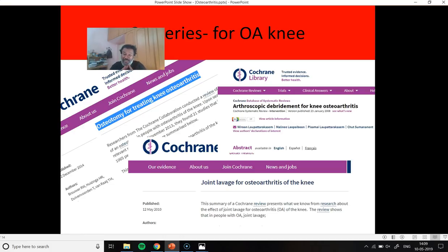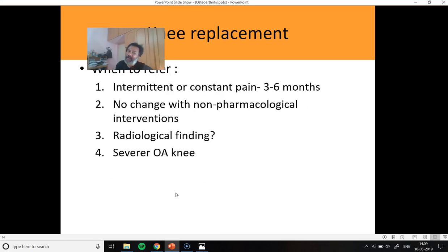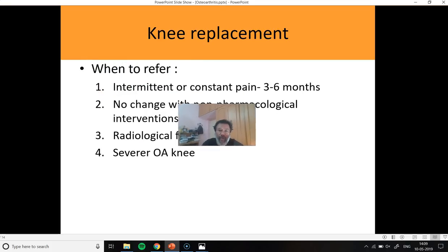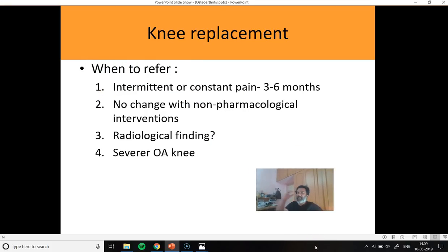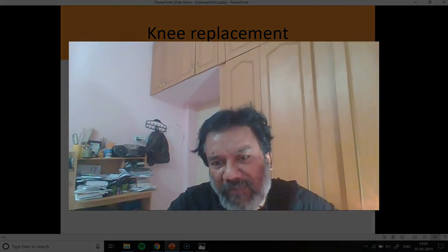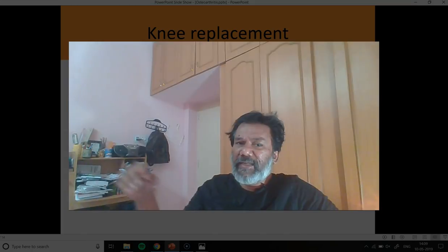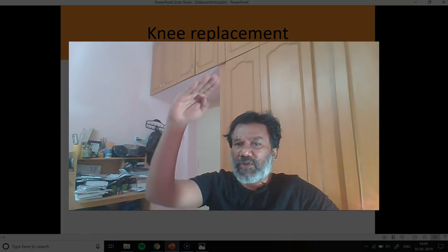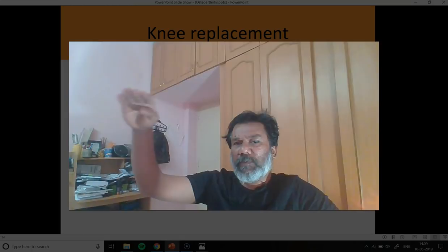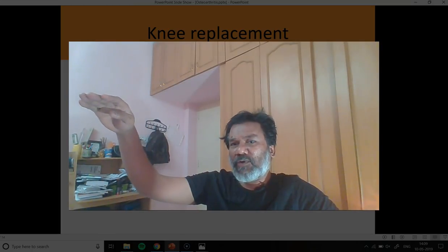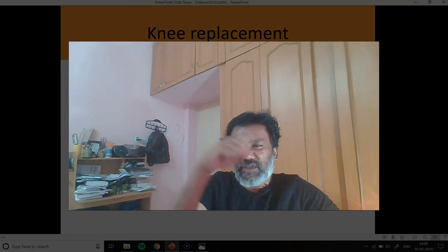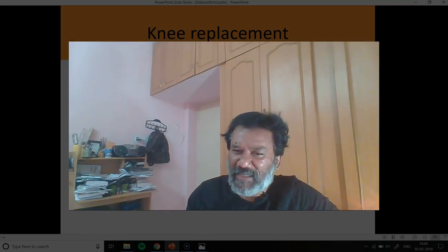Most orthopedic surgeons, reviews, and systematic reviews all point to not doing these surgeries. Now, a lot of people are getting knee replacements. The problem with OA knee is that it is a condition where the symptoms go up and down — it is not steadily up or steadily down. The symptoms wax and wane, going up and down over time.